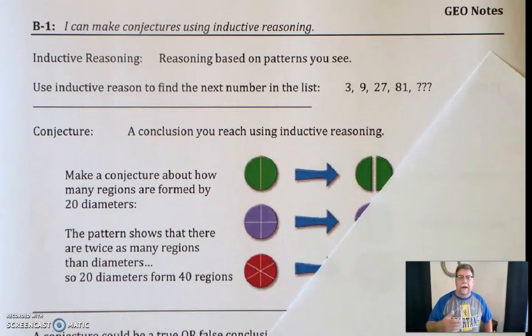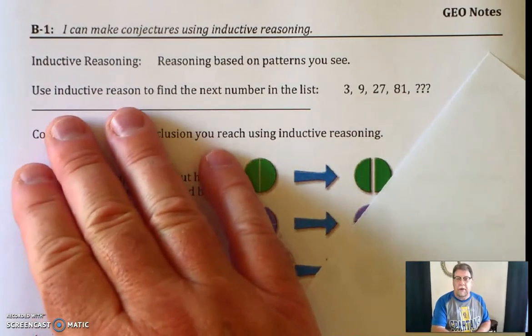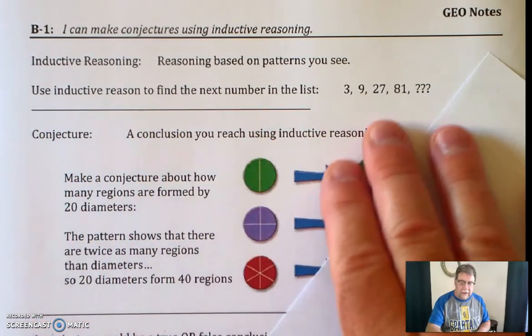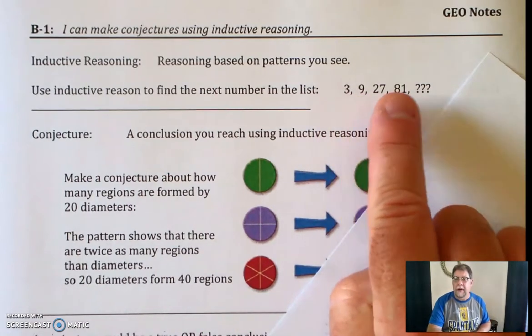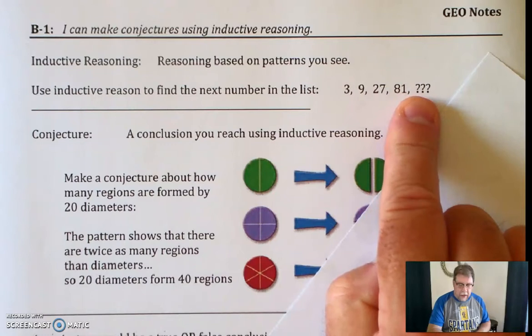Probably one of the easiest ways to do this is to look at what they call a sequence in a math class. So we're going to use inductive reasoning to find the next number in this list. So we look at this list, and we see, what's the pattern here, and how do I get the next number?